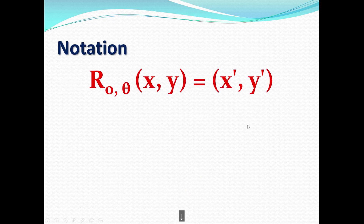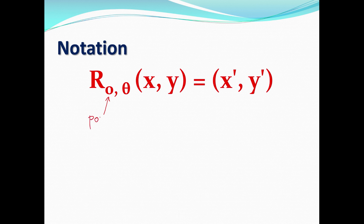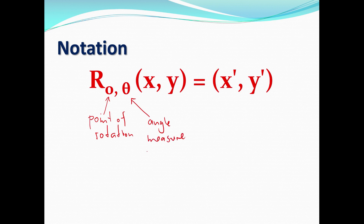Here's the notation for rotation. It's a capital R. We have to be careful to use capital R because lowercase r is designated for reflections. The first subscript is the point of rotation, and the second part is the angle measure in degrees.